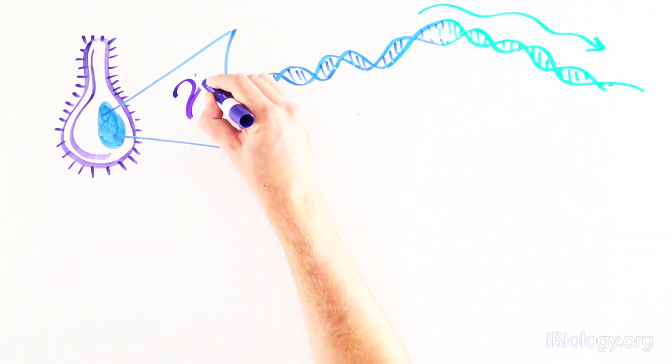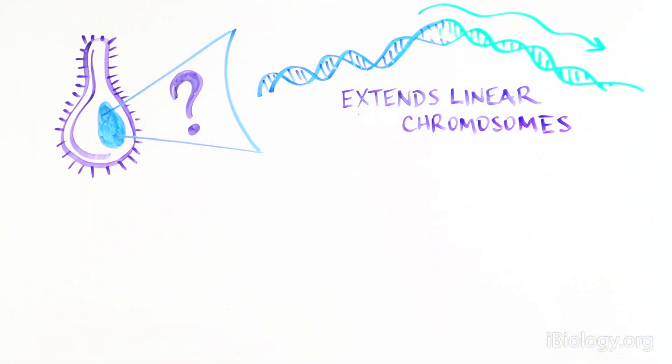So this important experiment conducted almost 30 years ago is the first evidence that there is something in the nucleus that can add a conserved sequence, T-T-G-G-G, and extend linear chromosomes.